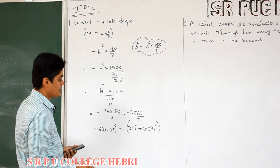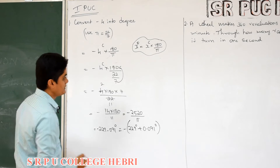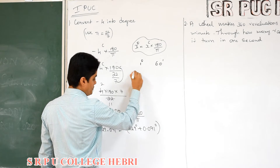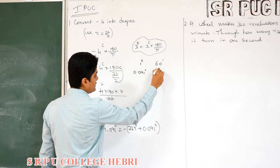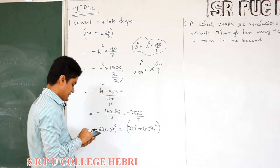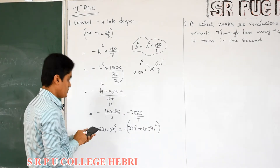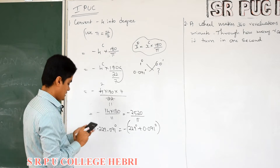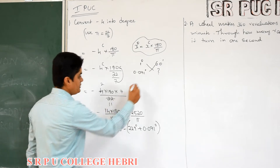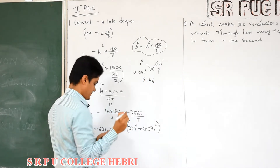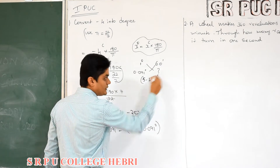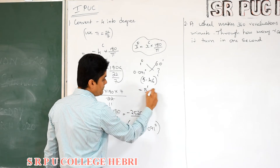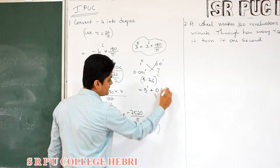Now that degree should be converted into minute and second. You know that 1 degree equals 60 minutes. So 0.091 degree — multiply by 60, you get 5.46. The unit here is minute. You can write this as 5 minutes plus 0.46 minute.